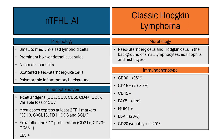Another differential is classic Hodgkin lymphoma, which can mimic AITL. It can also have Reed-Sternberg cells, but these are stereotypical of classic Hodgkin lymphoma. The background tumor microenvironment includes small lymphocytes, eosinophils, and histiocytes. Immunophenotypically, CD30 is positive in about 95% of cases, CD15 is positive in 70-80%, CD45 is negative, PAX5 is classically dim positive, MUM1 is usually positive, and EBV and CD20 can each be variably positive in about 20% of cases.